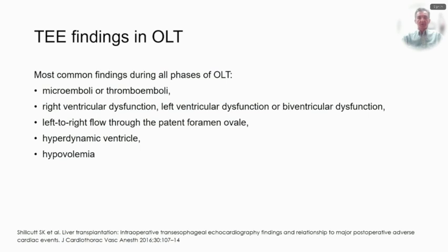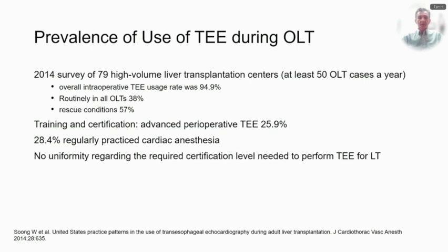Most common findings during all phases of liver transplantation are emboli, which may vary from microemboli to clots, ventricular dysfunction — right, left, or biventricular — unrecognized PFOs with left-to-right flow, a hyperdynamic ventricle, and hypovolemia. A 2014 survey of high-volume liver transplantation centers in the U.S., defined as at least 50 liver transplant cases a year, found a 95% overall intraoperative TEE usage rate, with 38% of centers using TEE routinely, while 57% were using it in special or rescue conditions. Only 26% of responders had an advanced perioperative TEE certification, with only 29% of them practicing cardiac anesthesia on a regular basis.